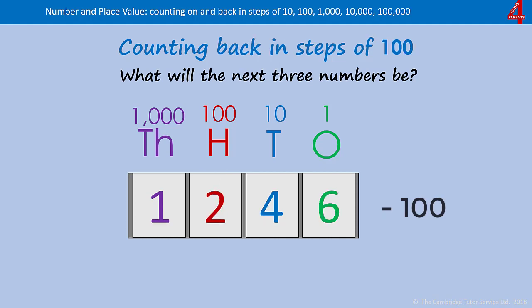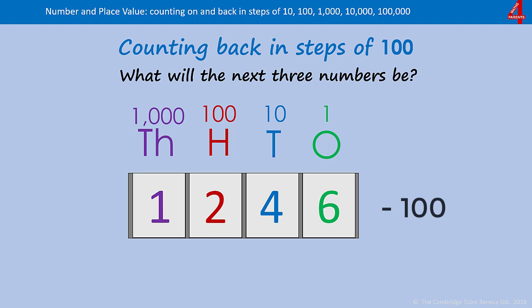This time we're going to count back in hundreds. Again, the tens and ones will stay the same. The hundreds will change every time; the thousands will change if we have to cross that boundary. What will the next three numbers be if we count back in steps of a hundred from one thousand, two hundred and forty-six? Pause the video and have a go.